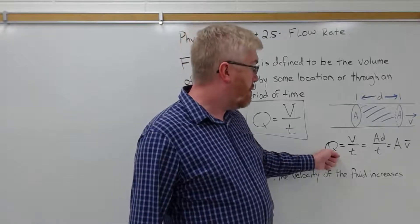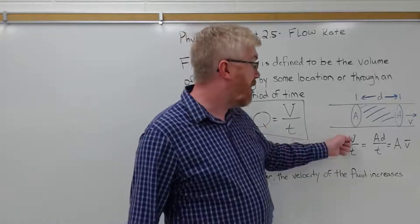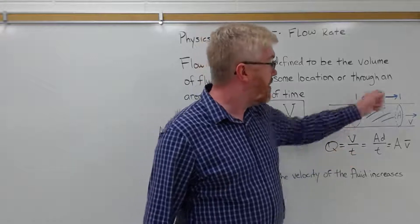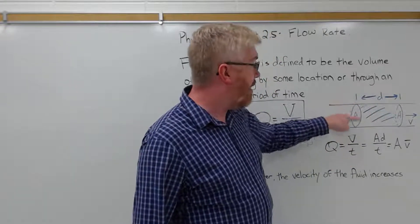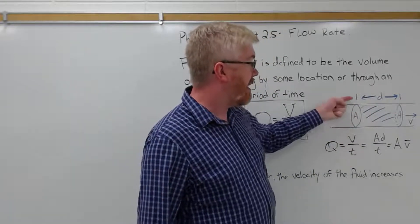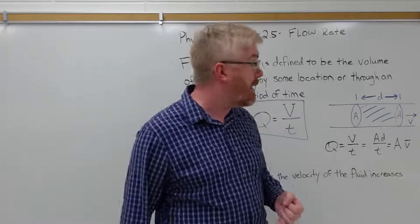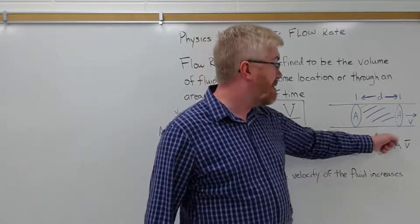Well, Q, the flow rate, is the volume over time. Well, for a cylinder, volume is the area of one end of the cylinder times the length of the cylinder, in this case D. So volume is A times D.